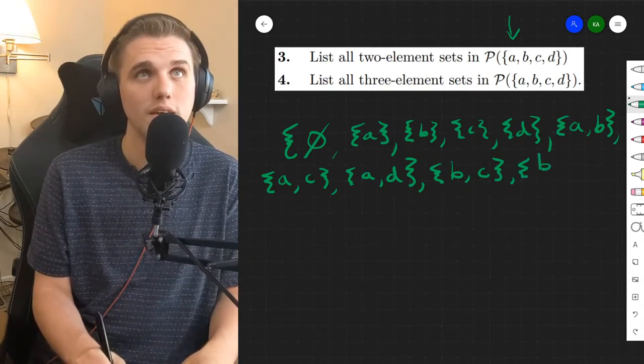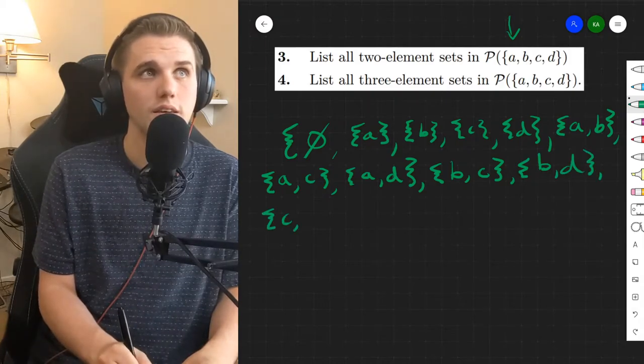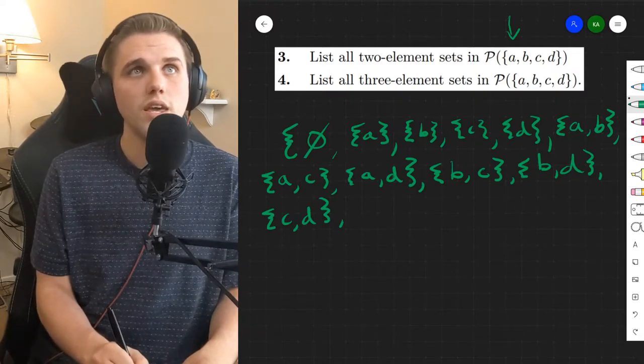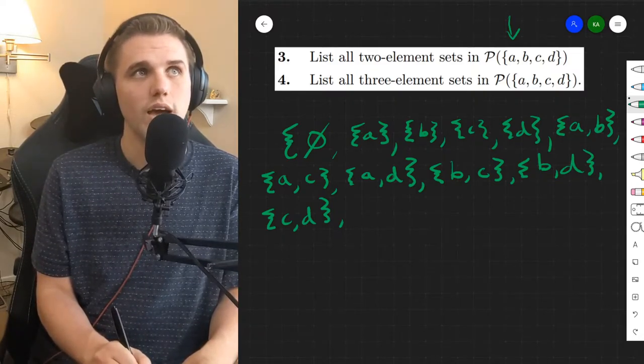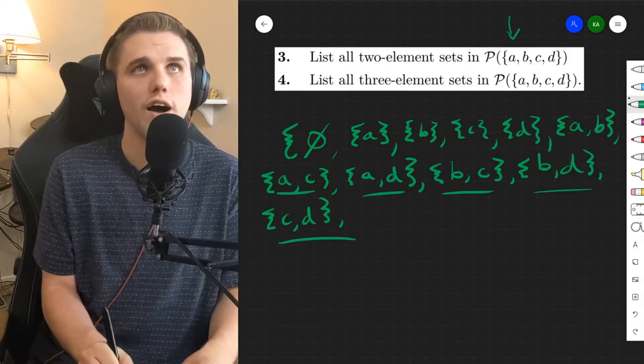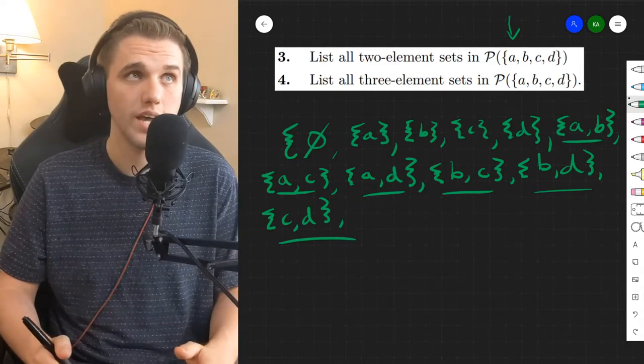All right, let's keep going. We have B and D and then C and D. So this is the set. So how many two-element subsets do we have? We have one, two, three, four, five, six. So the answer to problem three is six.